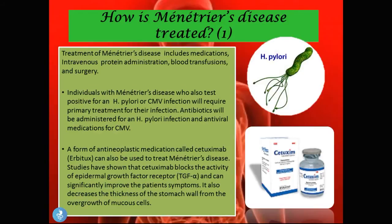So how is Ménétrier's disease treated? Treatment includes medications, intravenous protein administration, blood transfusions, and surgery. Individuals who also test positive for H. pylori or CMV will require primary treatment for their infections — antibiotics for H. pylori and antiviral medications for CMV. If patients test positive for H. pylori, they will require triple therapy. I did do a video on it, so you can check that out if you want to know more about the treatment for H. pylori.